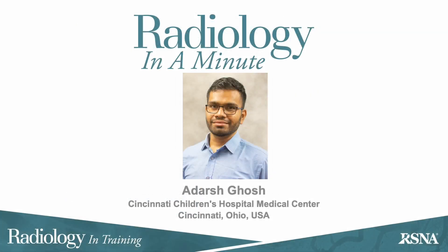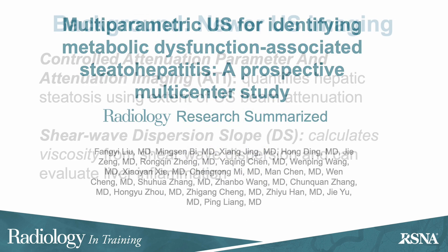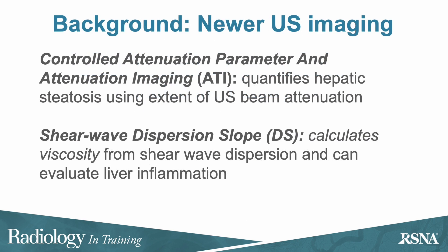Hello, I'm Ardush, Deputy Editor at Radiology and Training. Ultrasound methods such as attenuation imaging quantify hepatic steatosis from the extent of beam attenuation, while shear wave dispersion slope calculates tissue viscosity to identify liver inflammation.